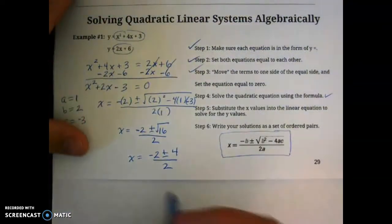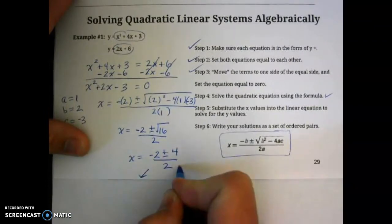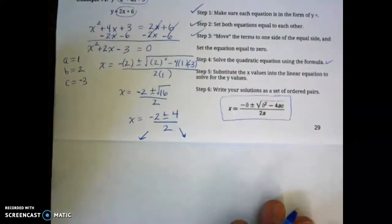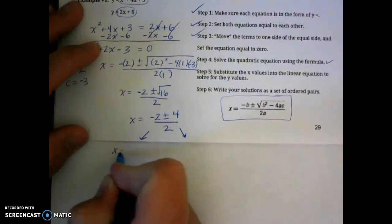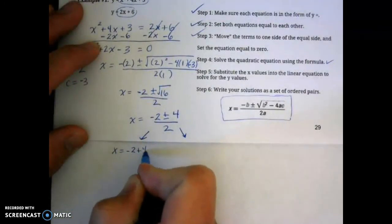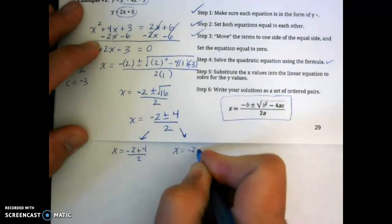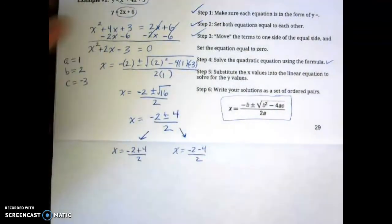And then, if you remember, our last step for solving quadratic formula is to break it up into the two equations, taking into account that plus and minus. So first, we're going to do x equals negative 2 plus 4 over 2. And then we'll take into account the negative over here, or the minus.